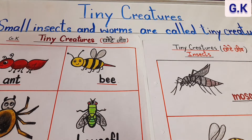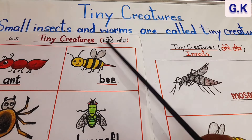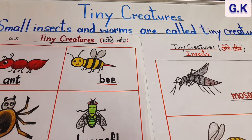Good morning everyone, welcome to my GK class. Today we shall learn about tiny creatures. Do you know the meaning of tiny creatures? Small insects and worms are called tiny creatures. Tiny creatures — हम लोग किसे कहते हैं? छोटे छोटे जीव को। जिसमें insects भी आते हैं और worms भी आते हैं।